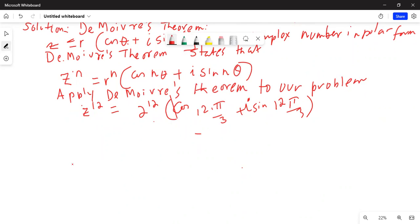Now I can write z to the power of 12 equals 2 to the power of 12 times cosine 12 pi over 3. Since 3 goes into 12 four times, this is cosine of 4 pi plus i sine of 4 pi.